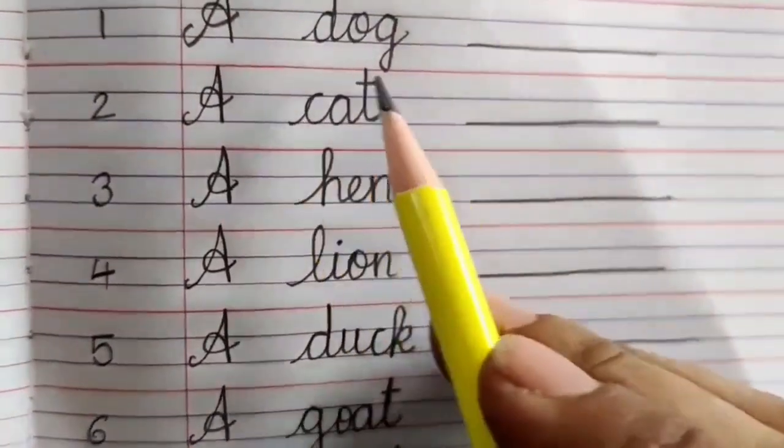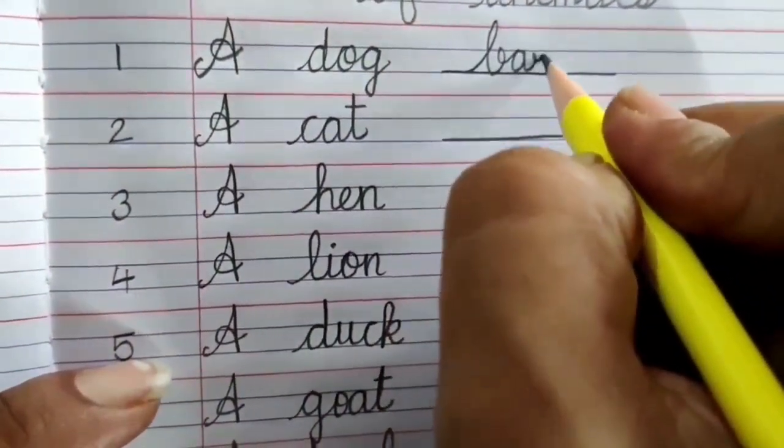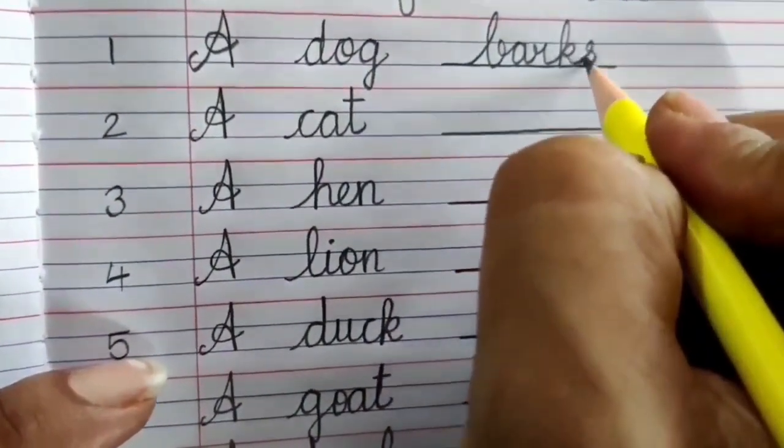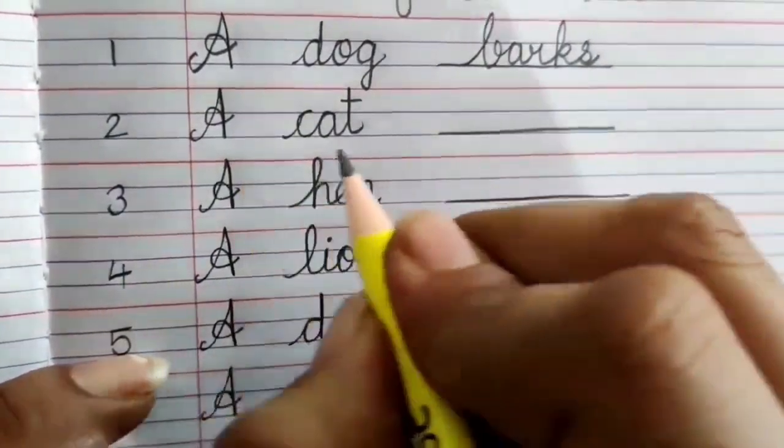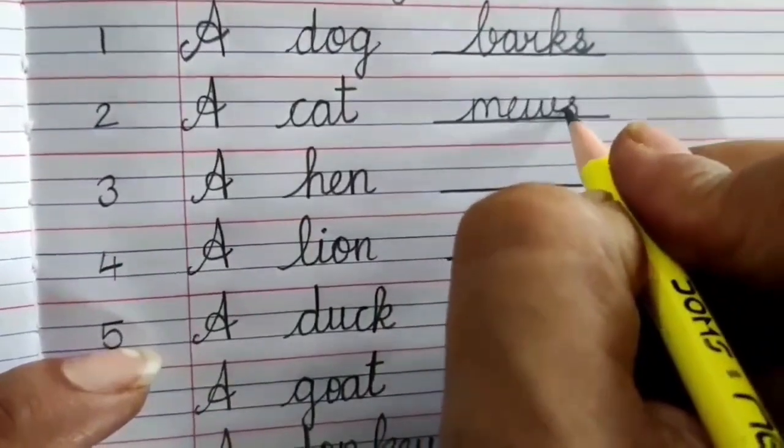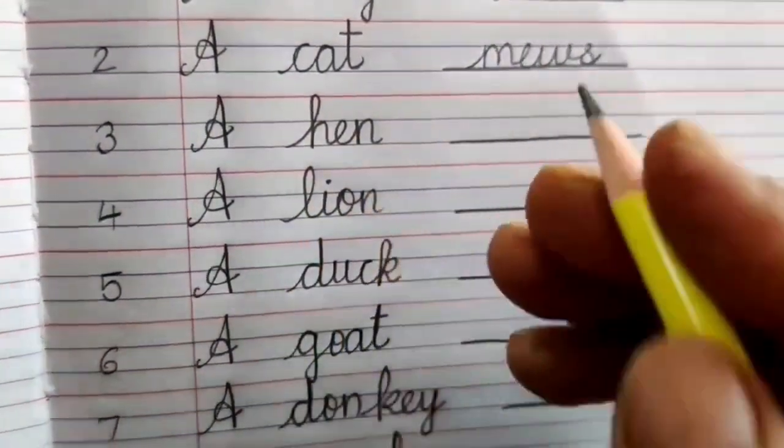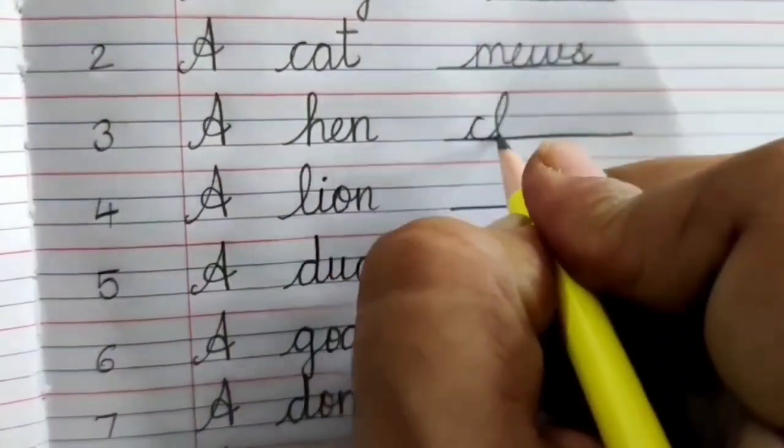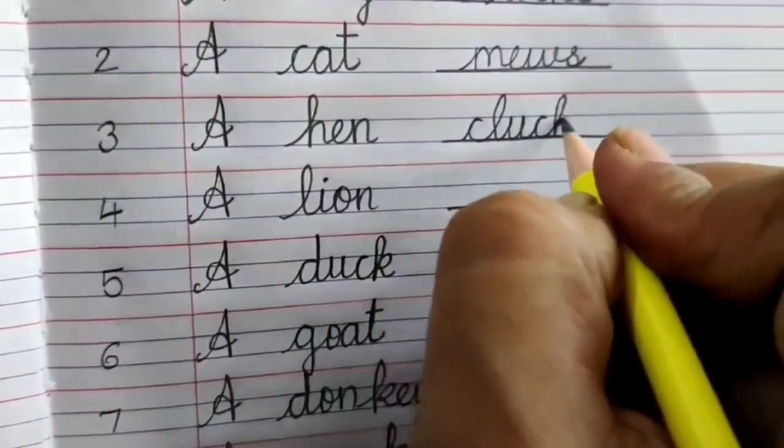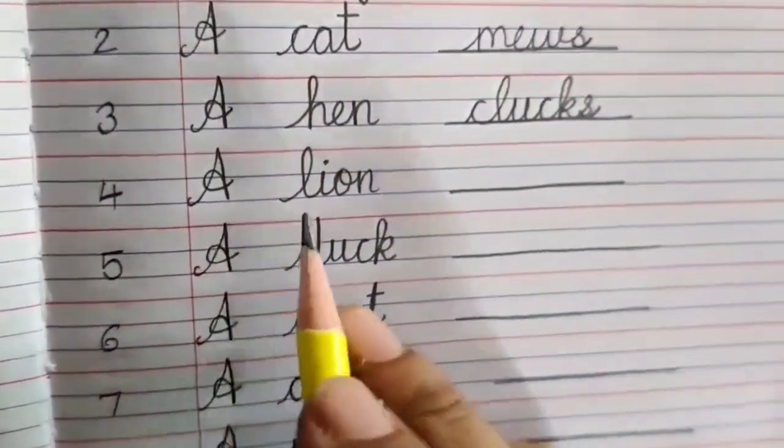Number 1, A dog barks B A R K S barks. A cat mews M E W S mews. A hen clucks C L U C K S clucks. A lion roars.